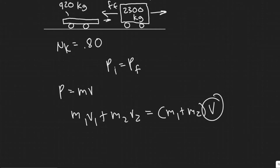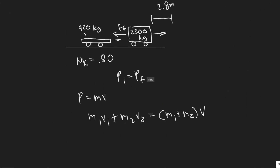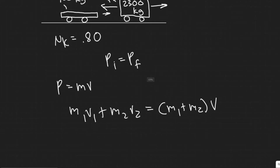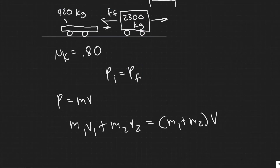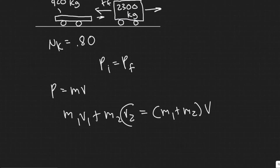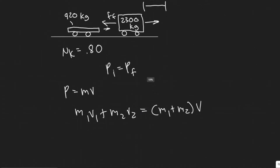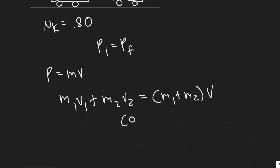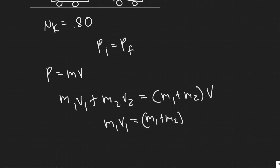The momentum after can just be M1 plus M2 times V, since they're now one combined object. Also notice that beforehand the SUV is at rest, so V2 — the velocity of the SUV before the collision — is just zero, making that whole term zero. This basically gives us M1V1 equals (M1 plus M2) multiplied by V.